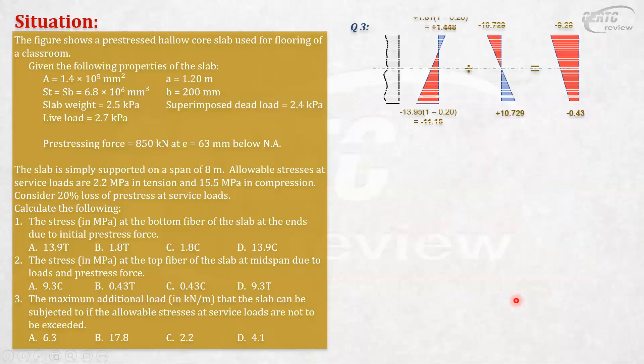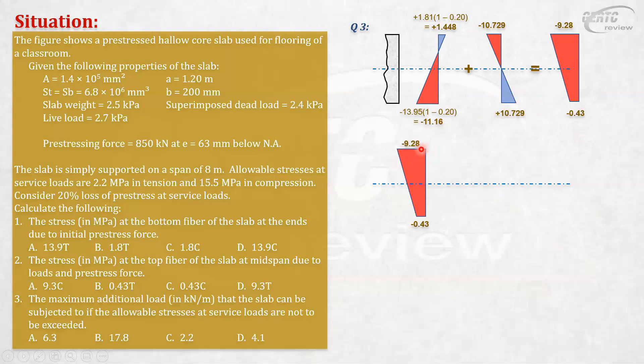How will you do that? For question number 3, first we already have question number 2 from the previous question - this is the stress due to the given loads with losses. Now, if you look at compression particularly, if we add more load, this will become larger negatively and this will become larger positively. So what will happen is this will become more negative: -10, -11, -12, -13, -14, and so on, until it reaches but not yet at the 15.5 allowable.